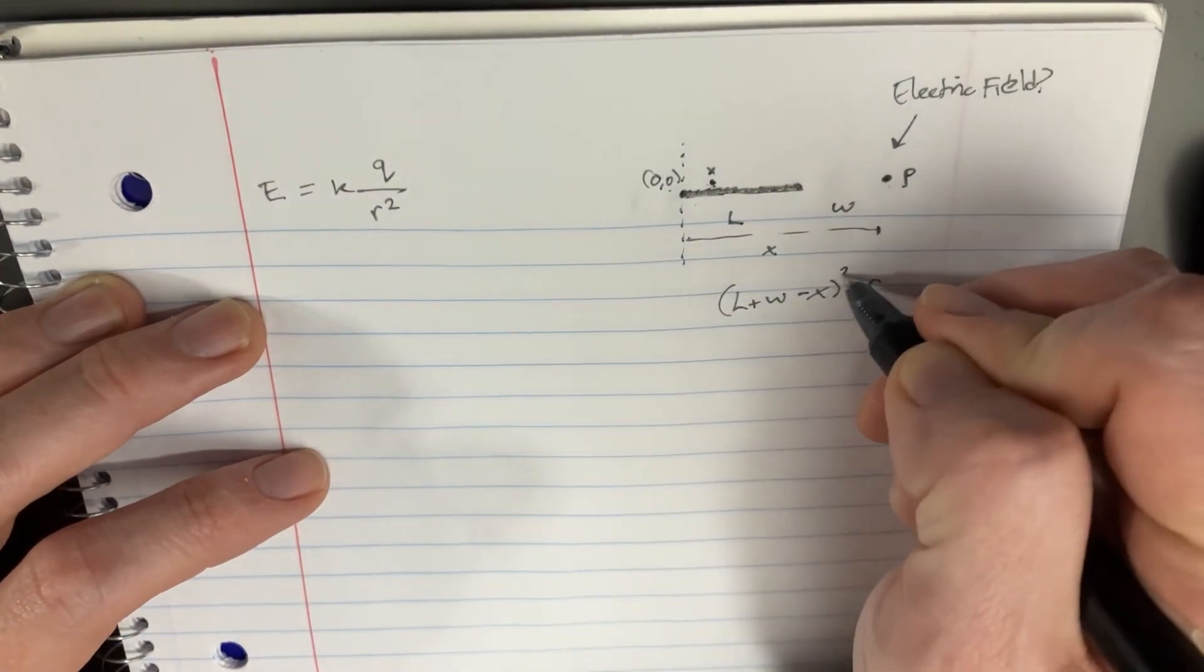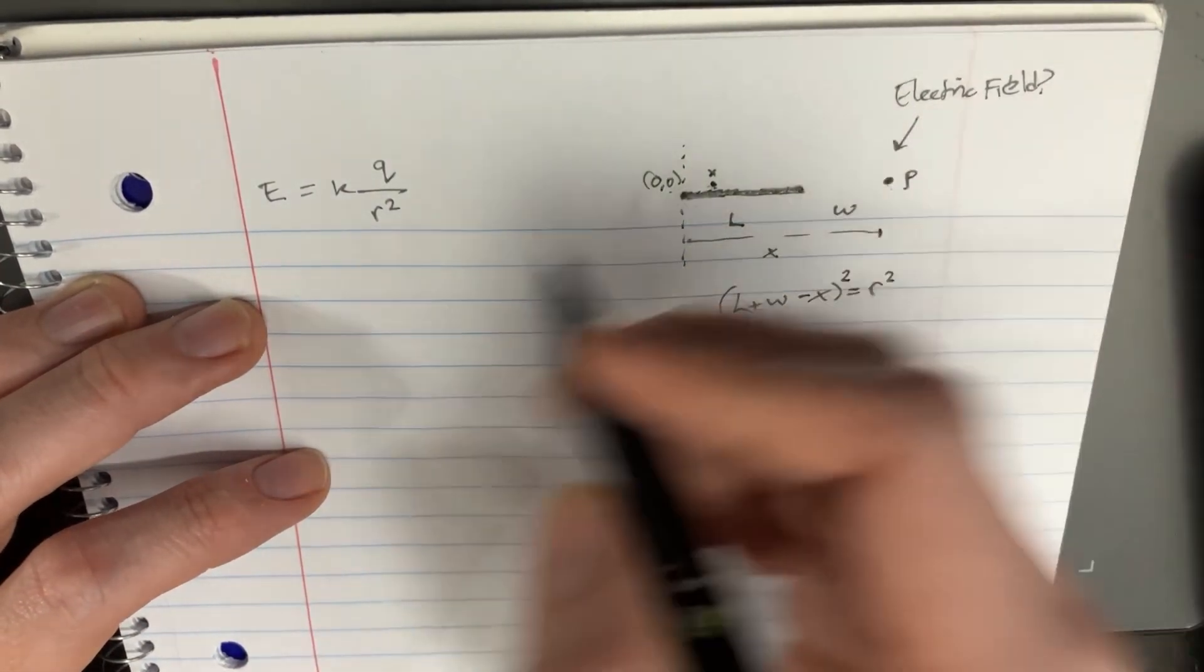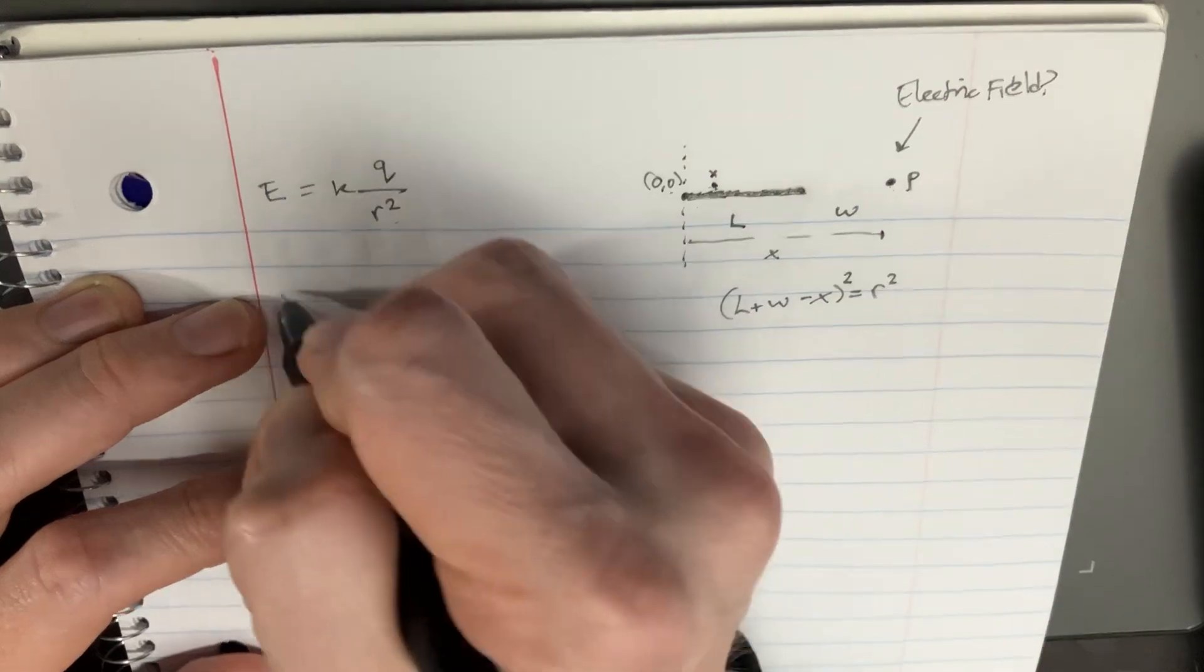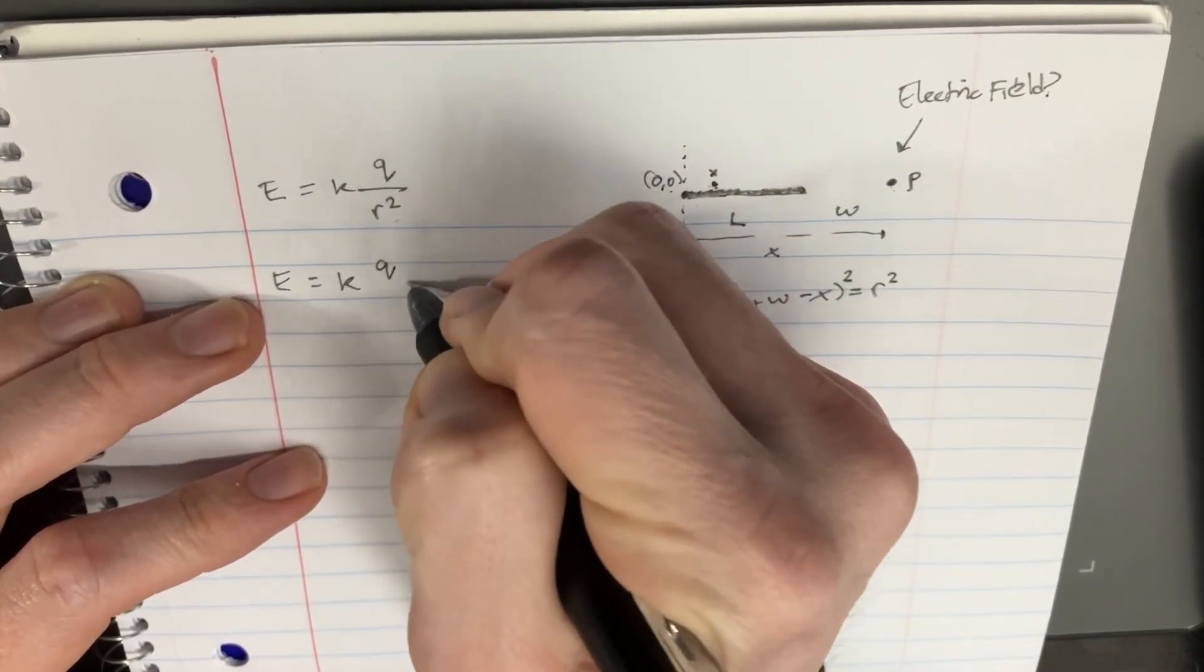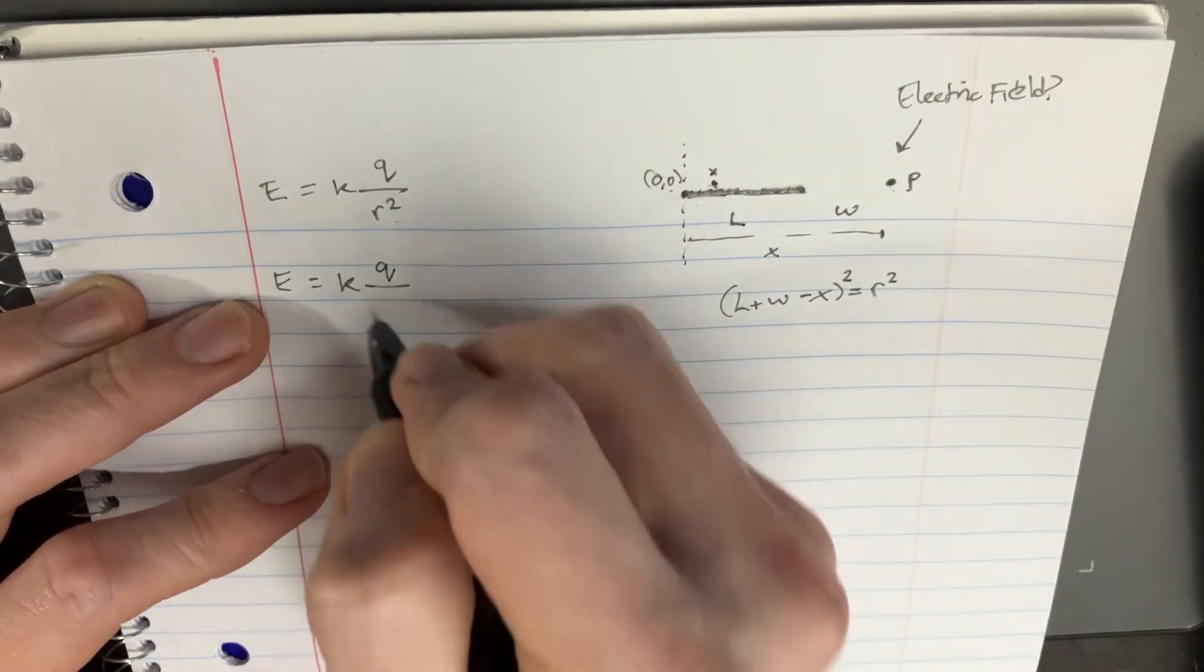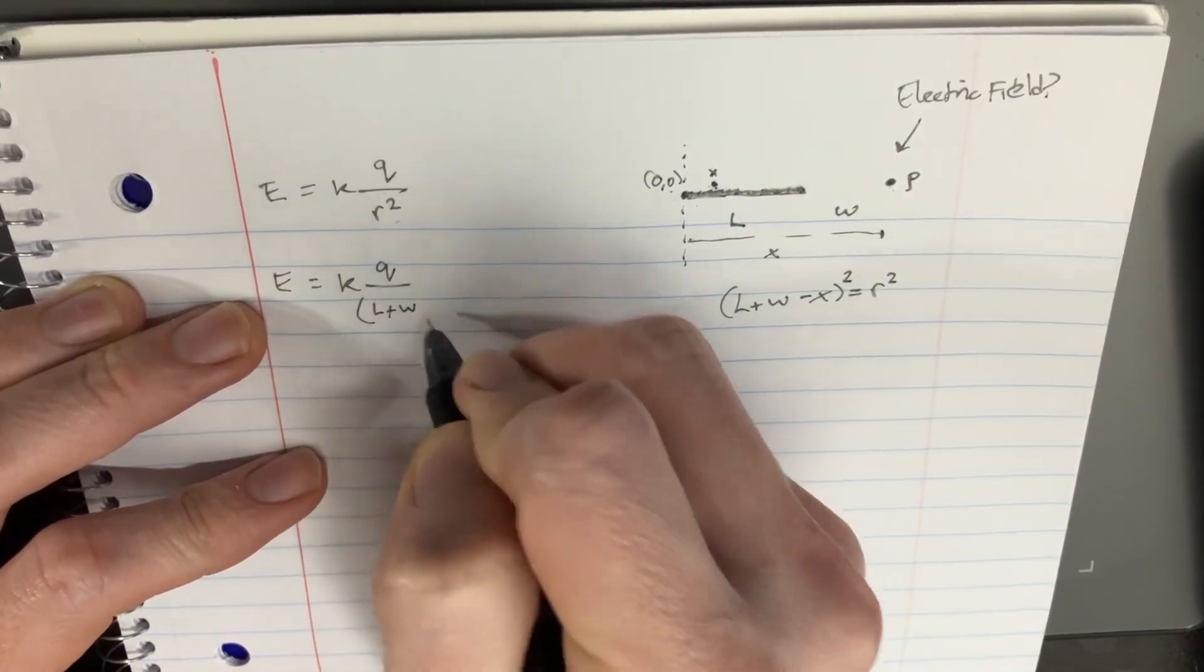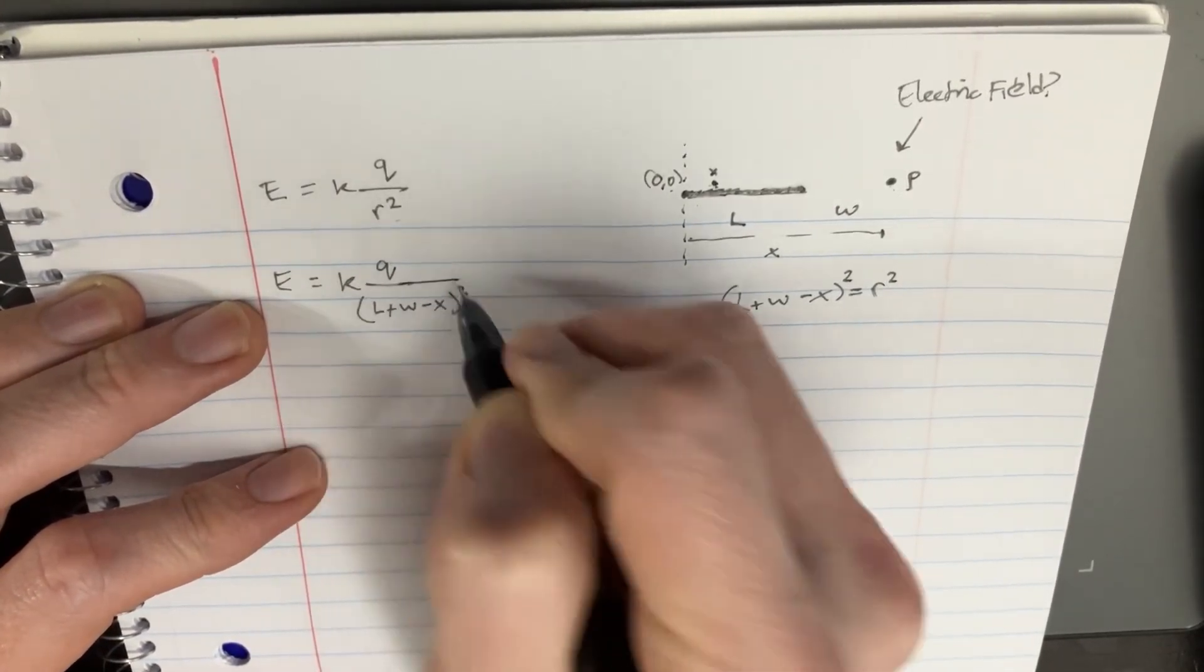So that's what we'll plug in there. You're obviously going to want to square that, because R squared. And so we're going to go E equals K, and then I suppose we'll figure out what that DQ stuff is later. But we're going to have L plus W minus X squared on the bottom.